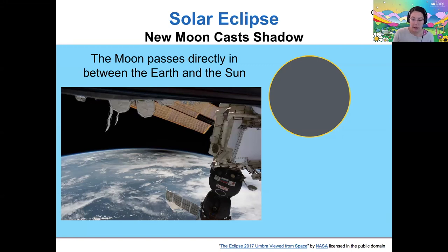This is our 2017 eclipse viewed from space. Different parts of the shadow have special names. The umbra is the darkest part of the shadow, and the penumbra is the lighter part of the shadow at the edges.